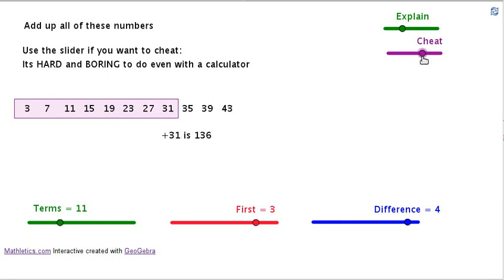Plus 27 is 105, plus 31 is 136, plus 35 is 171, plus 39 is 210, plus 43 is 253. It is hard and boring to do even with a calculator. It's hard to type all the numbers in without making mistakes, and there's probably better things you can do with your time.